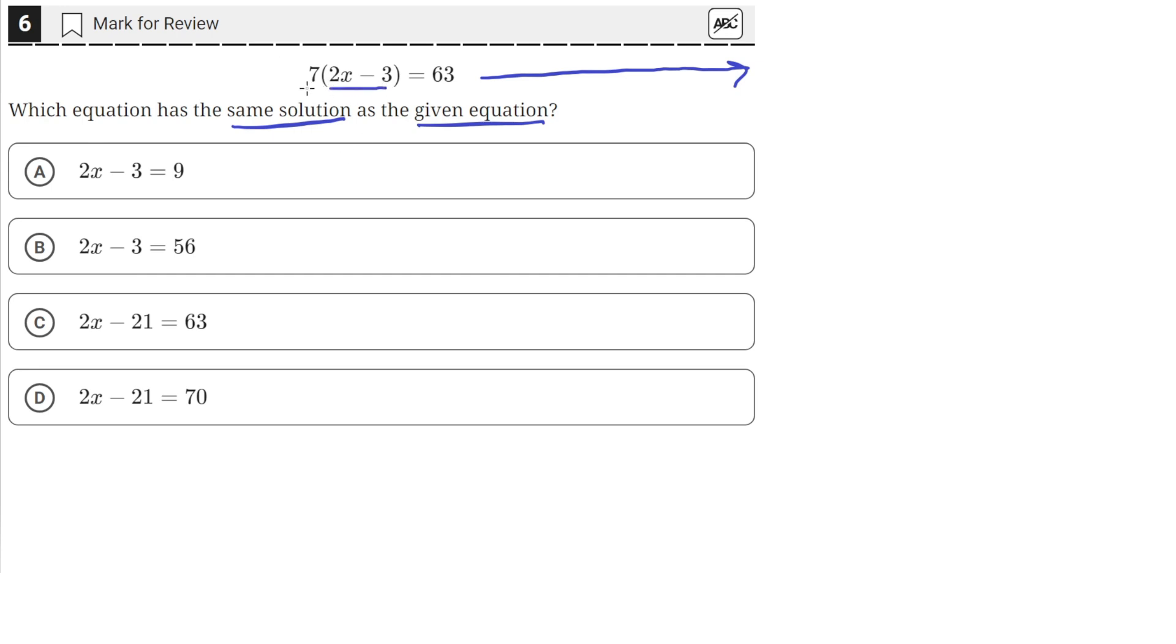So what we can do is divide both sides by 7 so that we can get rid of this coefficient out here.